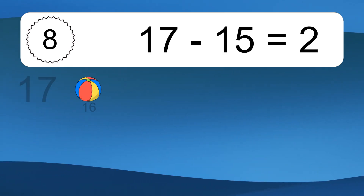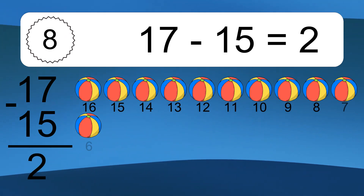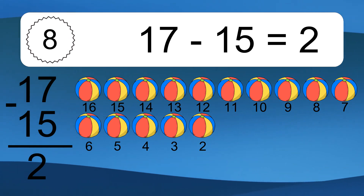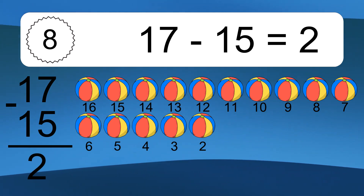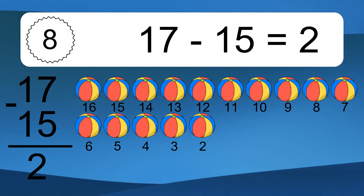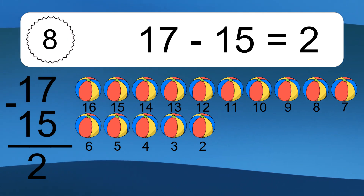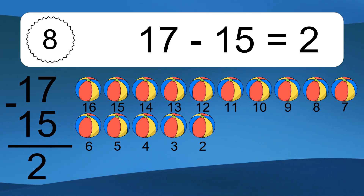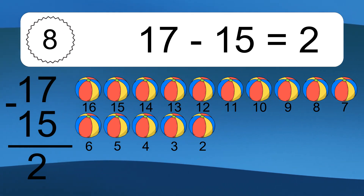17 minus 15 equals what? 17 minus 15 equals 2. Let's count it. 16, 15, 14, 13, 12, 11, 10, 9, 8, 7, 6, 5, 4, 3, 2.